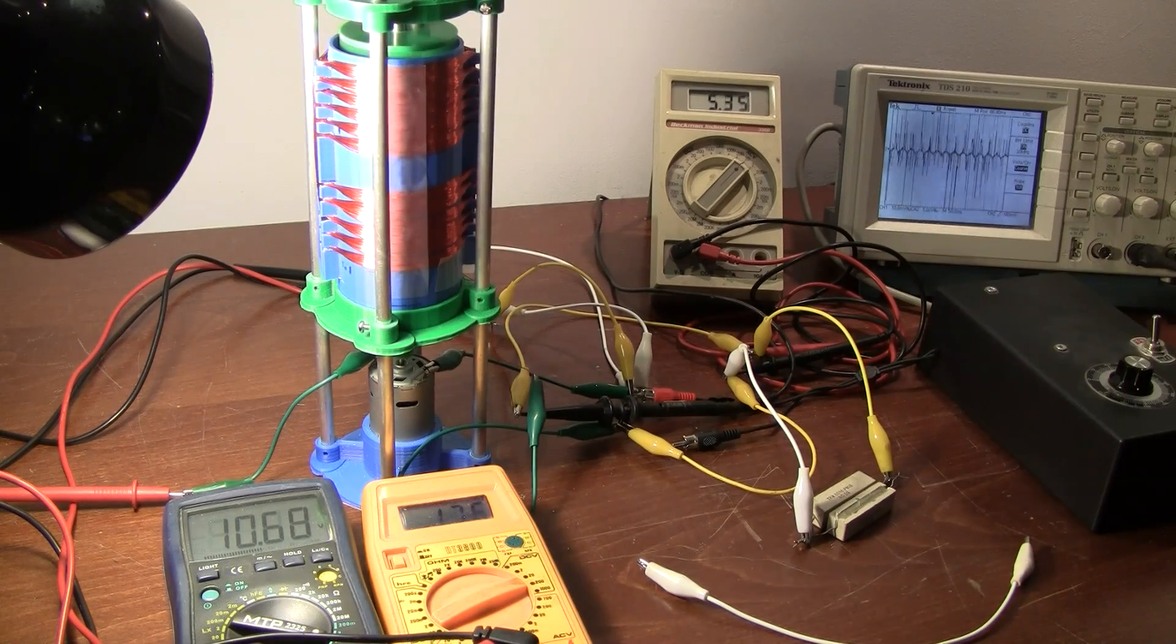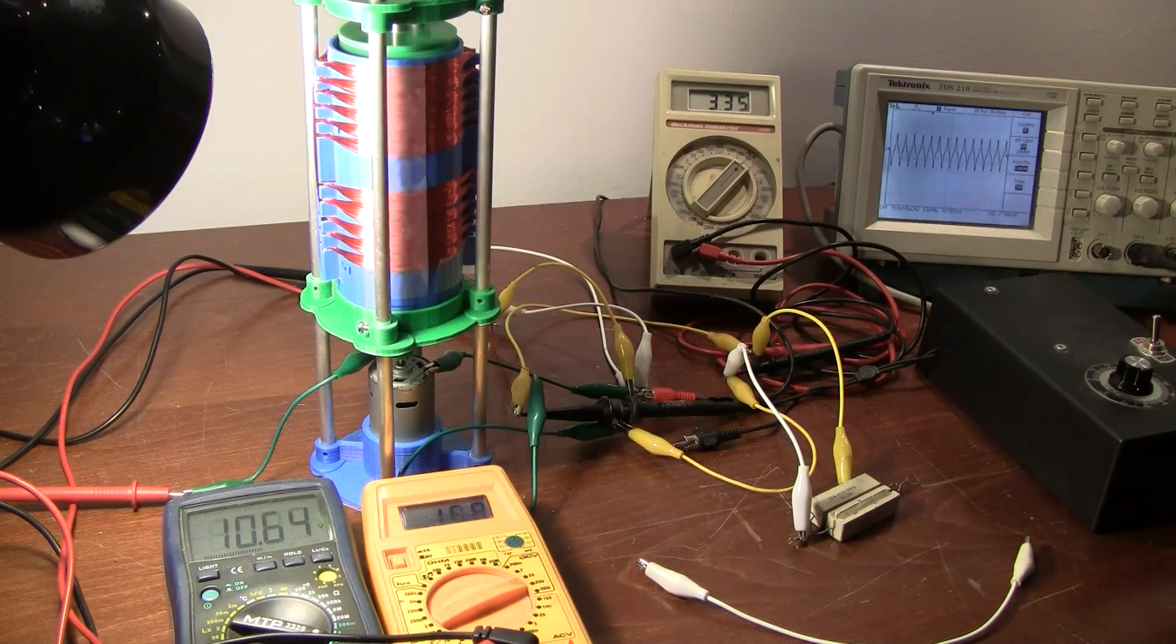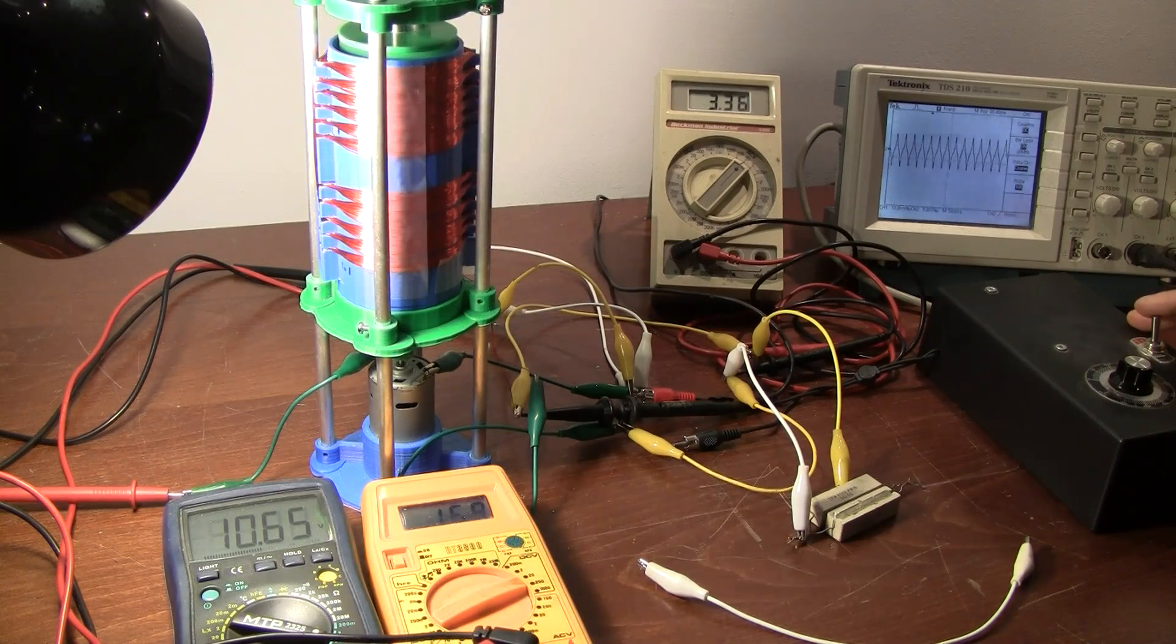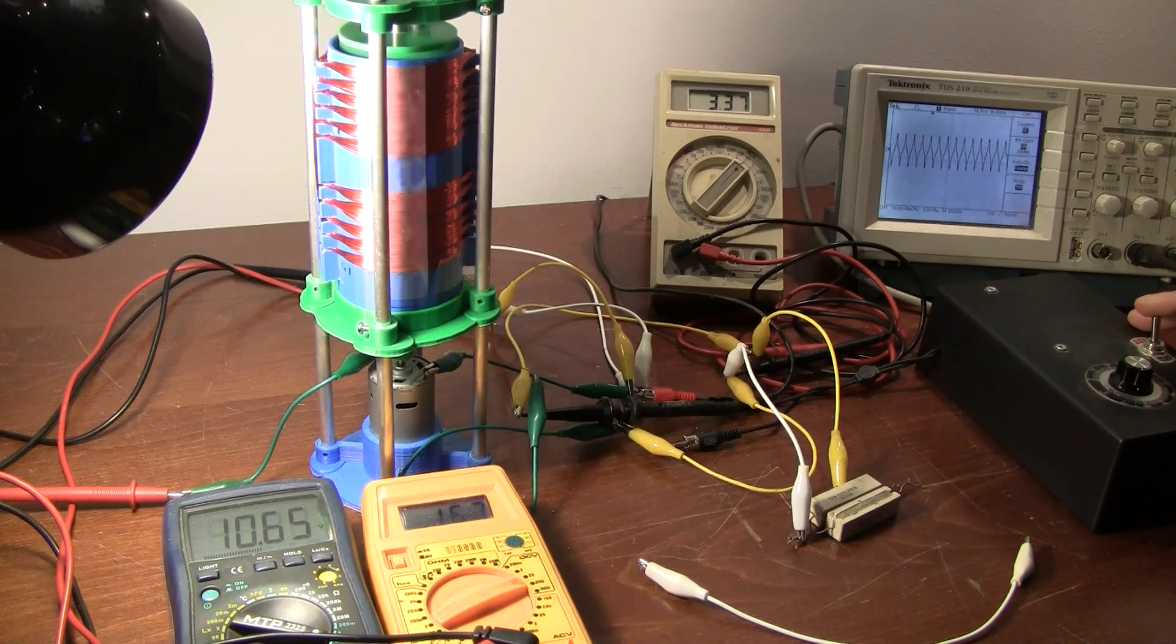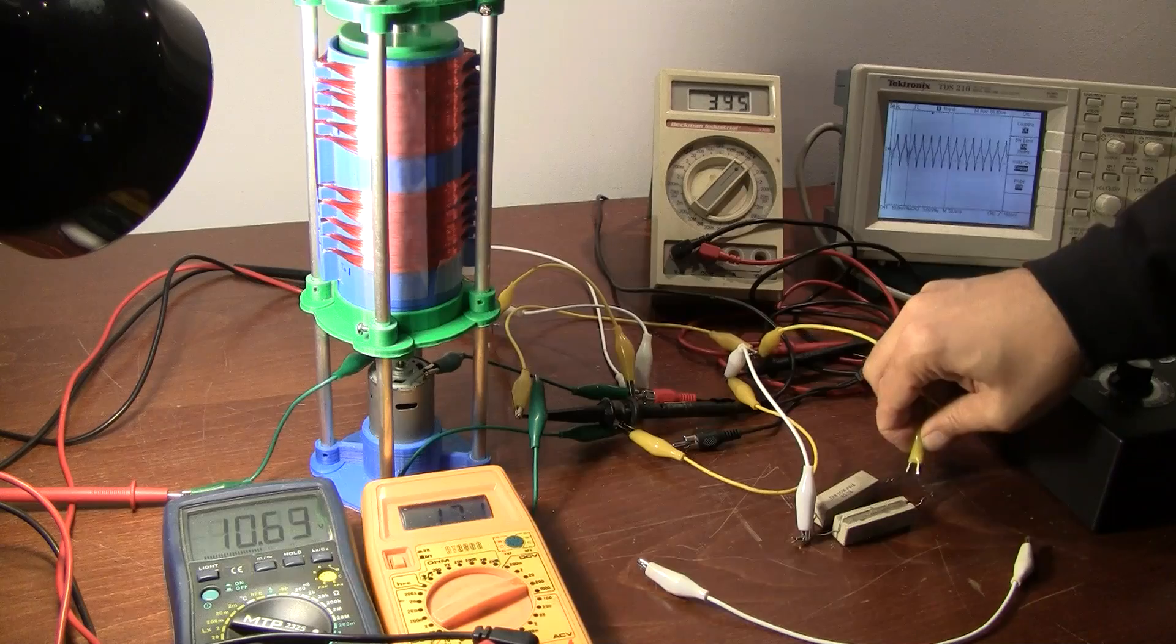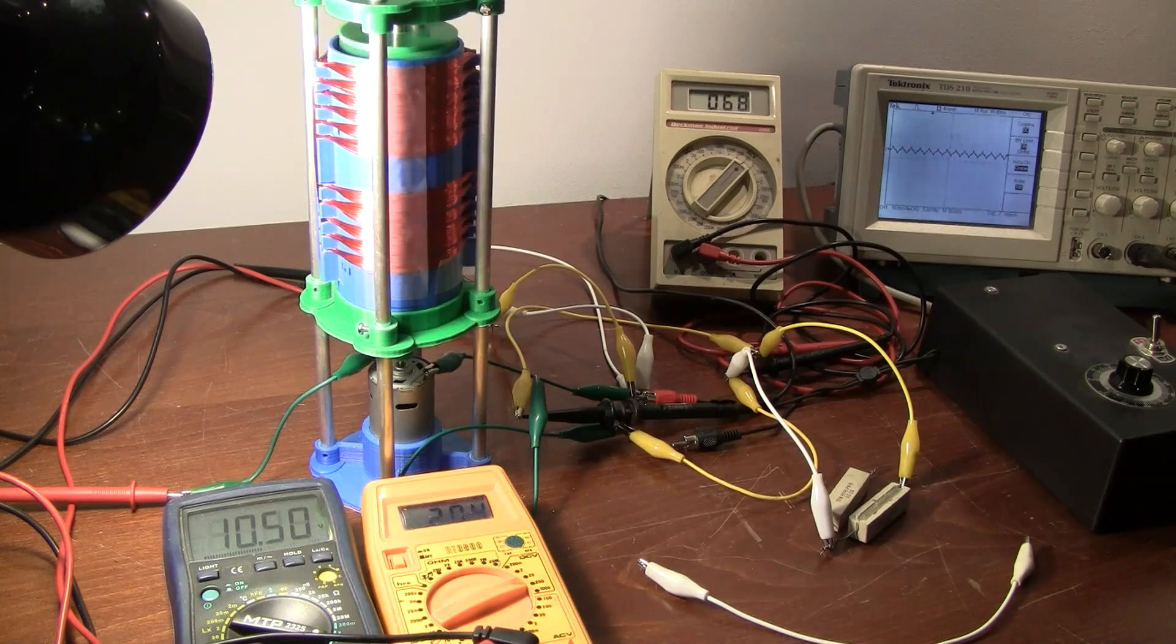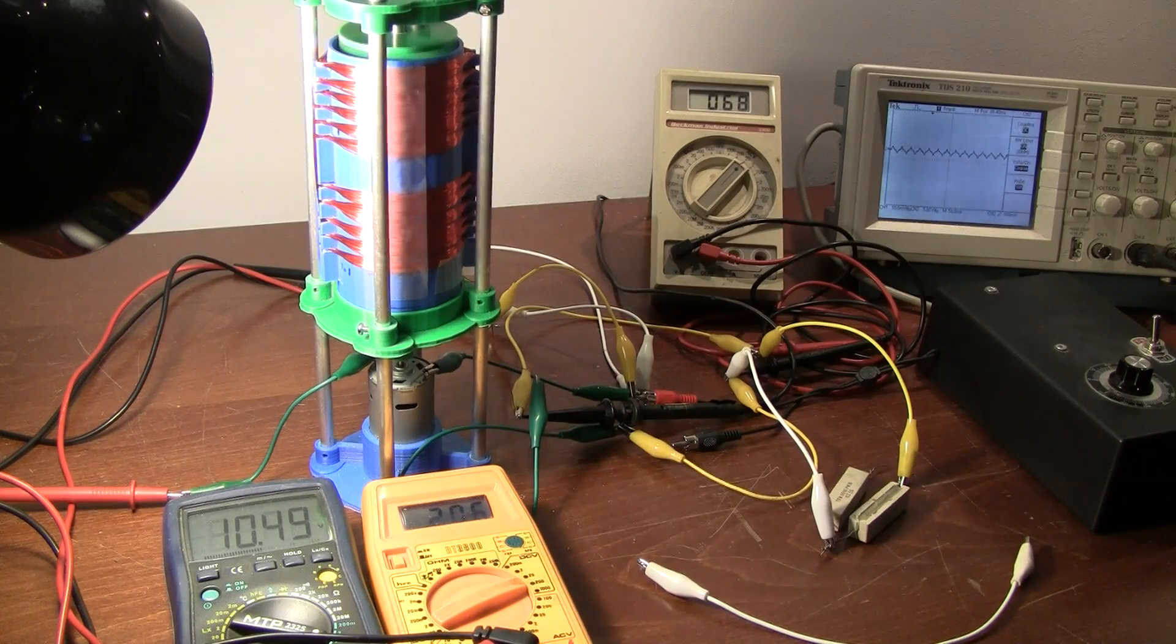So that was the 3 ohms. So just to read it off, it's 10.66 volts, 0.169 amps, 3.37 RMS on the output. And if we go to 3 ohms, it goes to 10.48 volts at 2.205 amps, 0.68 volts RMS.